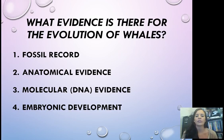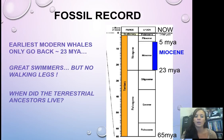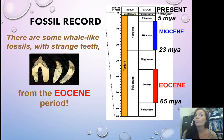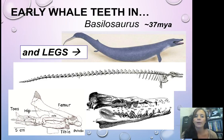There are four major pieces of evolutionary evidence, focusing on whales. First, the fossil record. The earliest modern whales go back only 23 million years ago, and they don't have legs. So where did those terrestrial ancestors come from? Our current whales live in the Miocene period, but in the fossil record there are whale-like fossils with strange teeth more like current terrestrial mammals, from the Eocene period. Here are some examples of early whale teeth — one of the earliest aquatic versions of the terrestrial ancestors, and you'll still see they have some tiny back legs.